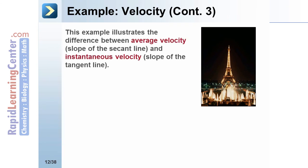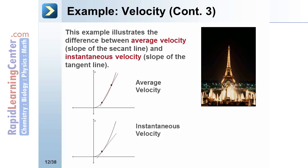This example illustrates the difference between average velocity, which is the slope of the secant line, and instantaneous velocity, which is the slope of the tangent line.